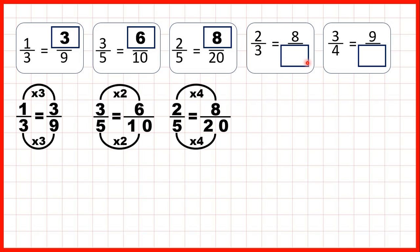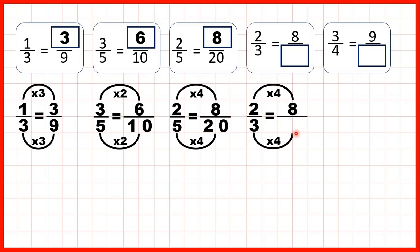Now for these next questions, it's the denominator that's missing, but we follow the same steps. Eight is in the two times table. Two times four is eight, and here what we've done to the numerator we need to do to the denominator, and three times four is twelve, so twelve is our missing denominator.